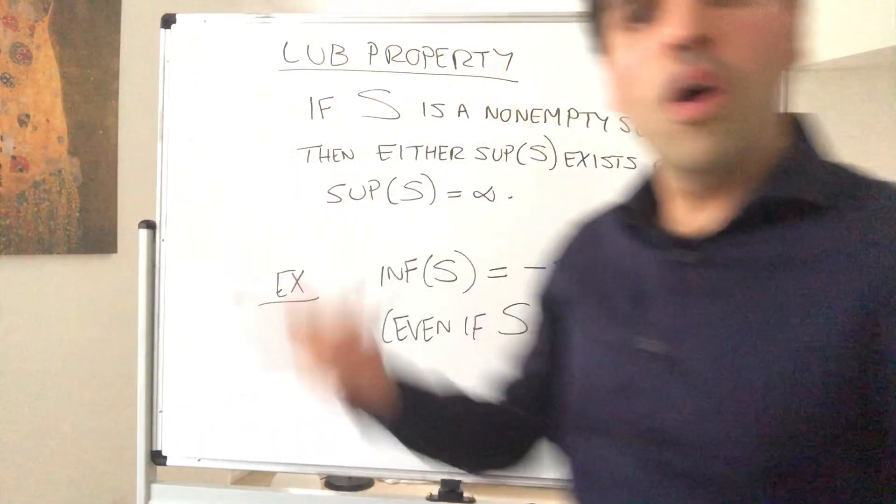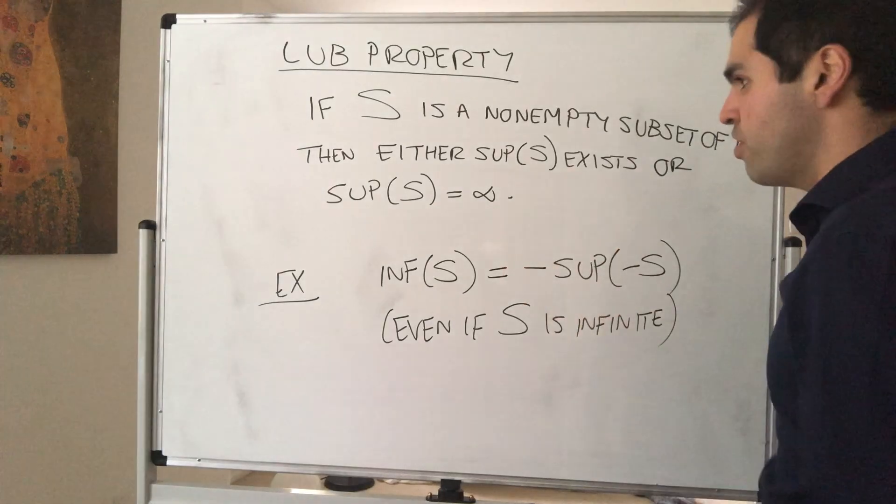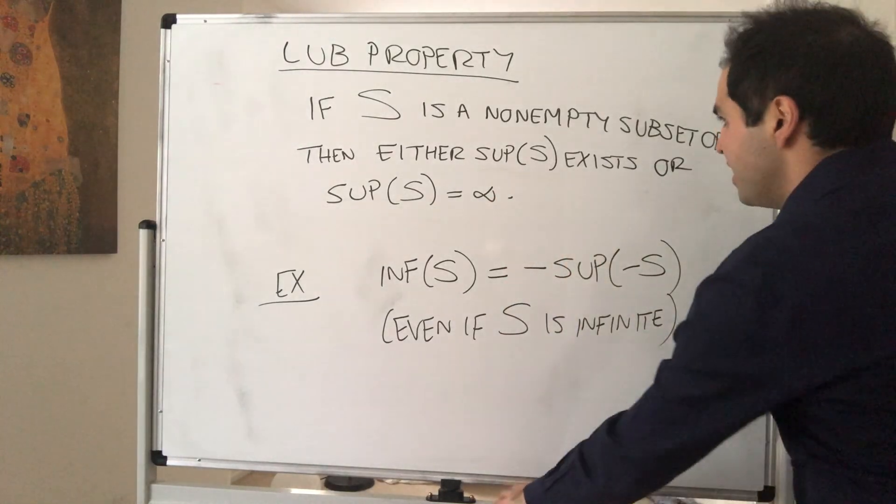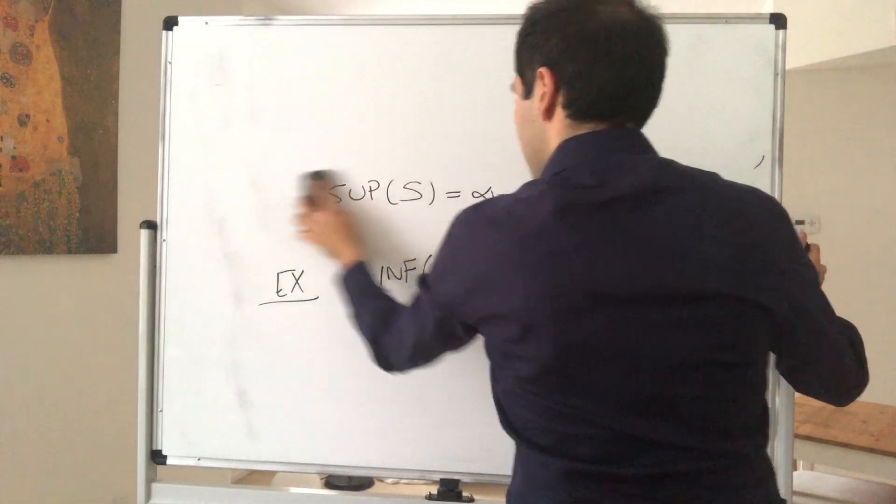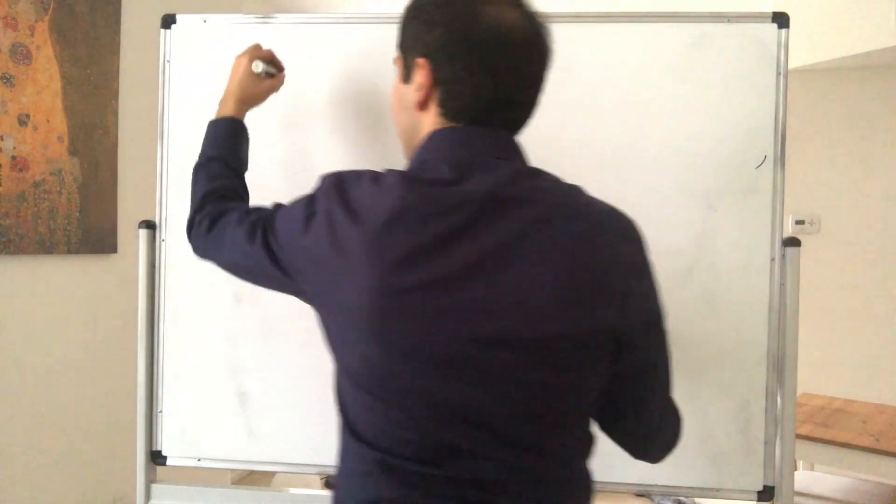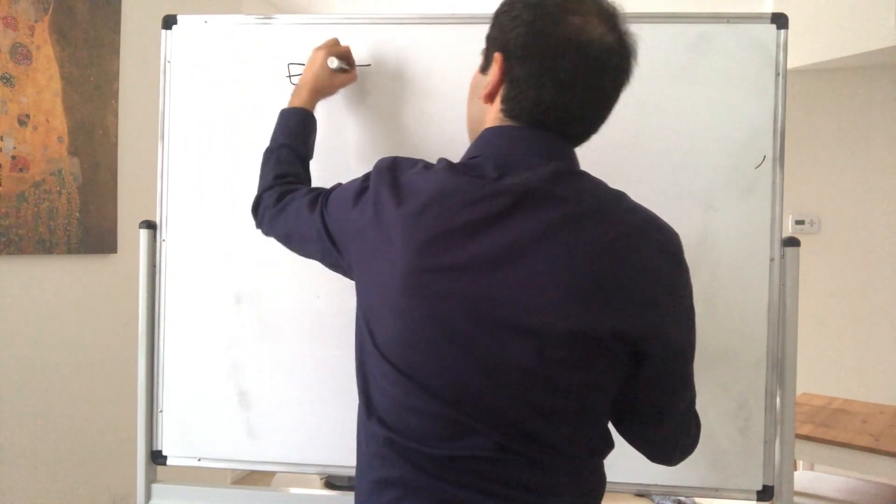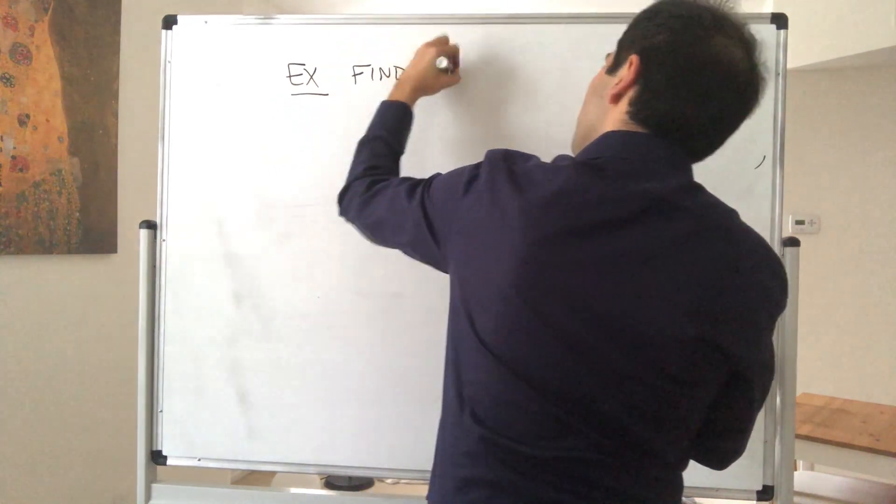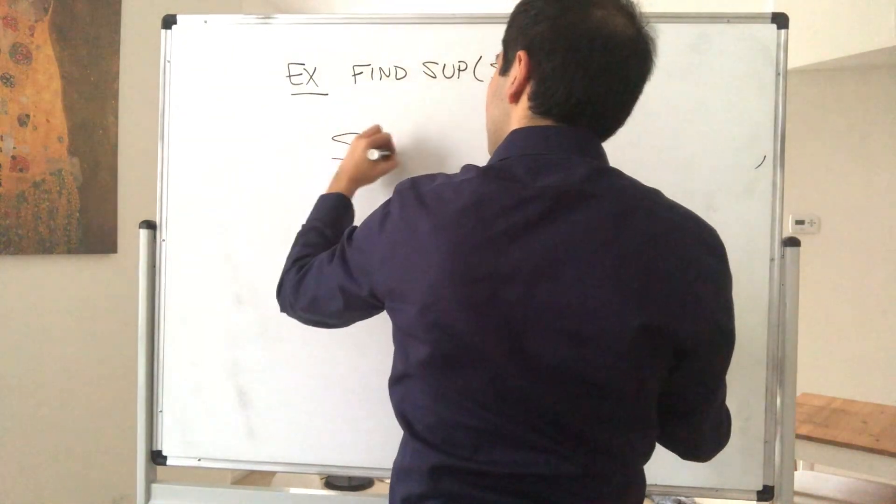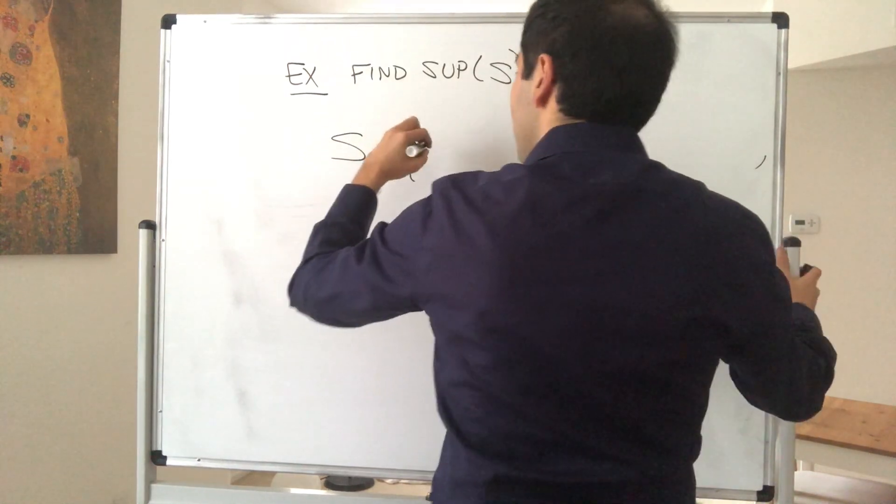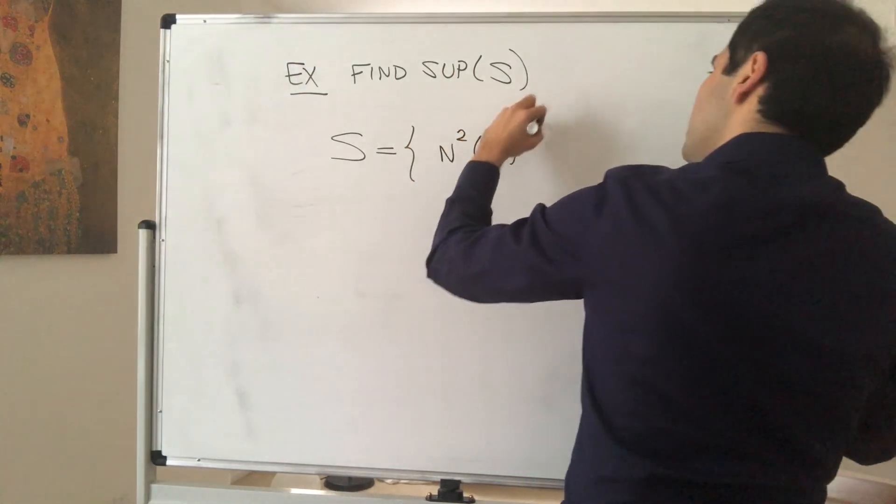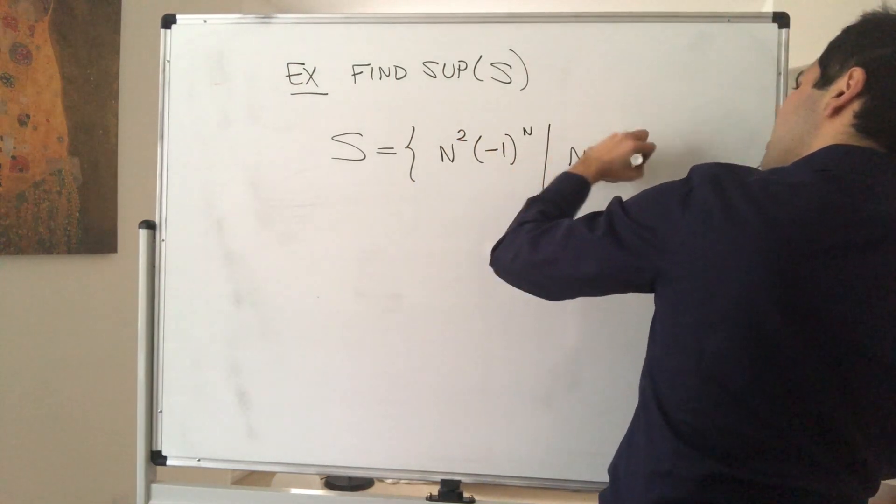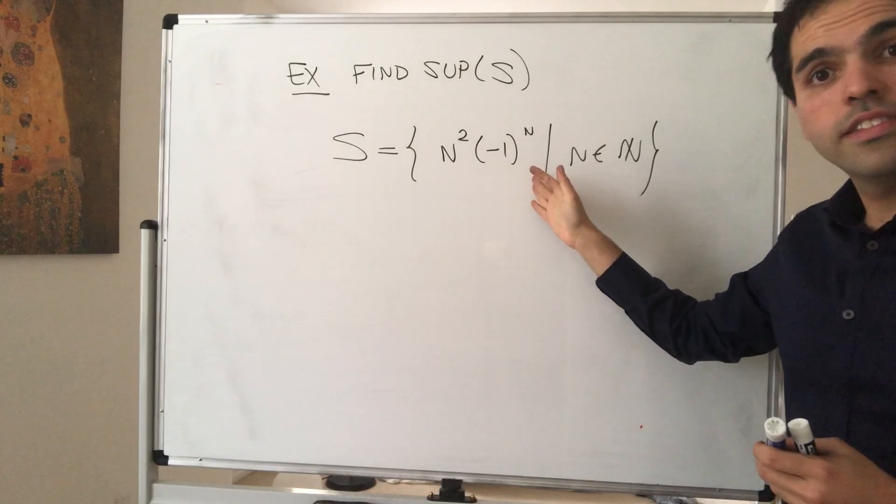And last but not least, let's just do one little problem with this supremum being infinite. So for instance, consider the following set. Let's find the sup of S, where S is the following sequence. So it's n squared times minus 1 to the n, where n is a natural number. So what does this sequence look like?